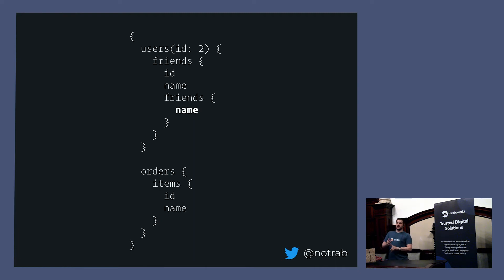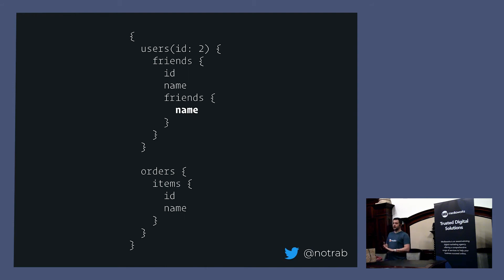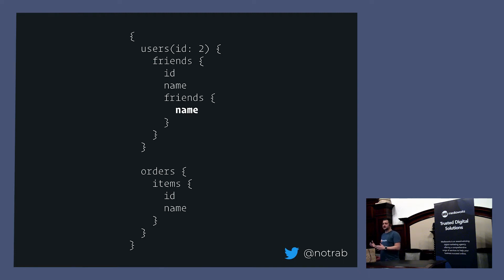The GraphQL layer figures out the join logic — whether it has to go to multiple databases. It's kind of magic to the front-end developer; they don't have to worry about round trips. As a front-end developer, you might implement the GraphQL layer yourself. I strongly feel that the people making requests to the GraphQL endpoint should be the same people building it. GraphQL layers belong with the front-end developer team.